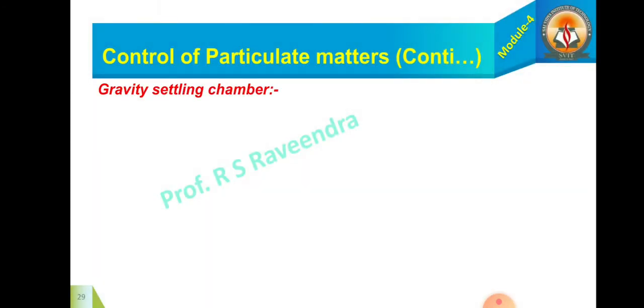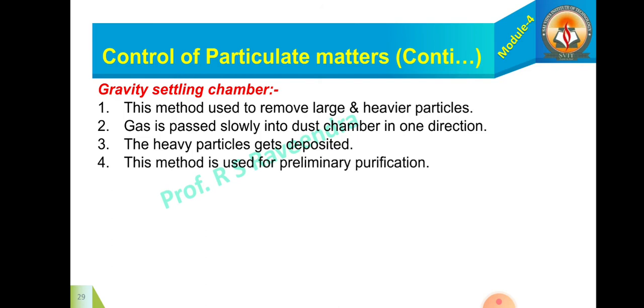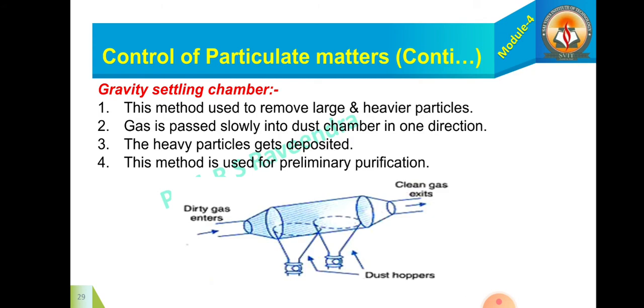Secondly, gravity settling chamber: this method is used to remove large and heavier particles. The gas is passed slowly into the dust chamber in one direction, the heavy particles get deposited, and this method is used for preliminary purification. So this is the dust chamber in which the particulate matter gets converted into some useful or harmless products.